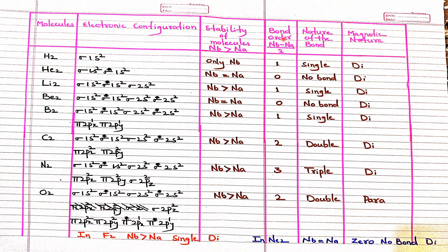For every molecule, after writing the electronic configuration, we determine: stability, bond order, nature of the bond, and magnetic nature. For H₂: it is definitely stable because all electrons are bonding. Bond order = (Nb − Na)/2 = (2 − 0)/2 = 1, so it is a single bond. Since all electrons are paired, H₂ is diamagnetic — placed in a magnetic field, it is repelled.